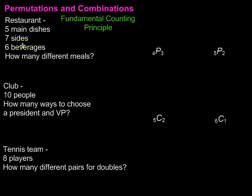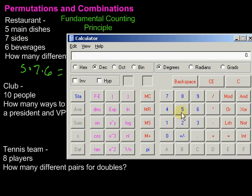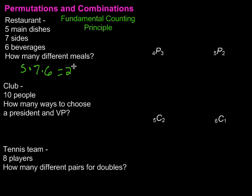The fundamental counting principle says that we can just multiply those things, and that will tell us how many different meals can be produced. We take five times seven times six. Five times seven is 35, times six is 210. So there are 210 different meals that can be produced. You could list out all of those, but the fundamental counting principle tells us all we need to do is multiply those numbers together.